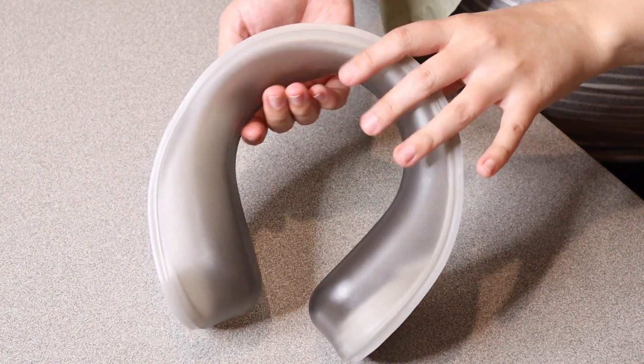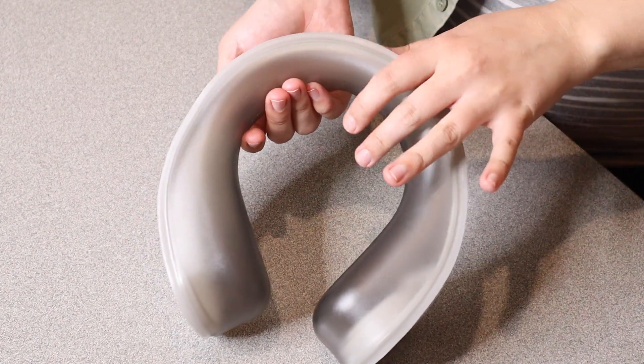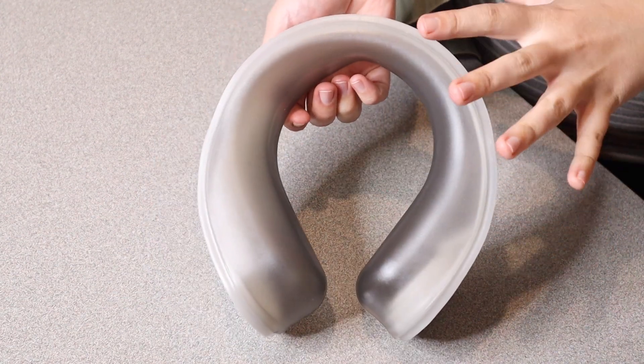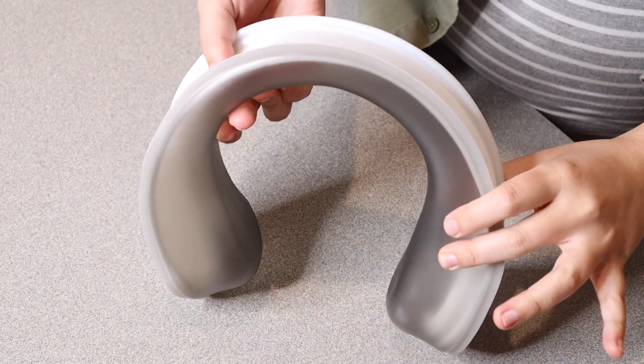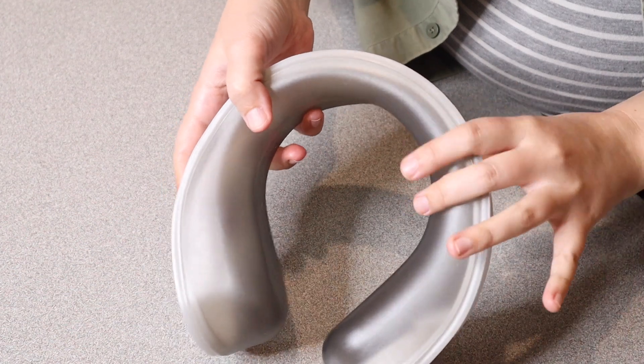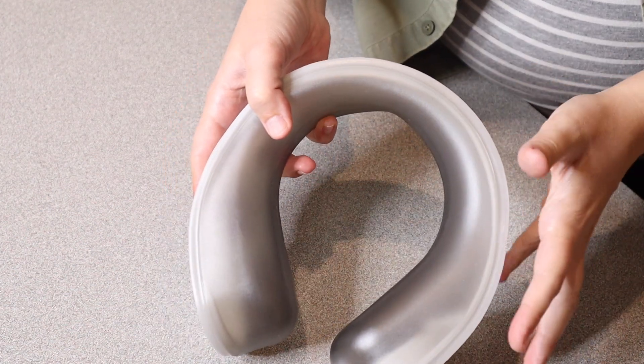This has a capacity of 700 milliliters of water. Not only can you use this for your neck, you can also use this around your shoulder or around your knees, which would be perfect for sports injuries.